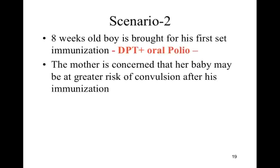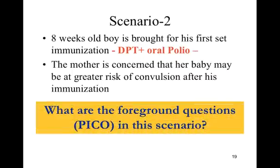Now let us move to our second scenario. An eight-week-old boy is brought for his first set of immunization, which is DPT and oral polio vaccine. The mother is concerned that her baby may be at greater risk of convulsion after his immunization. Reading this scenario, we find the mother is concerned about the risk of convulsion after the vaccine, so this PICO is PICO harm.